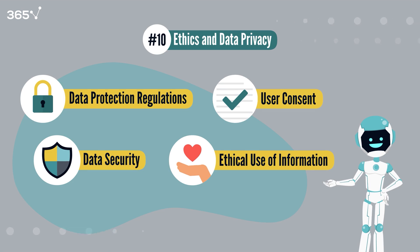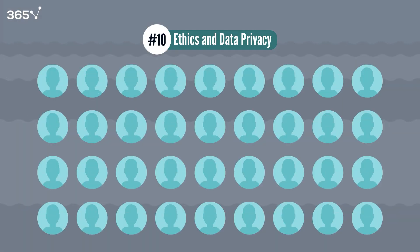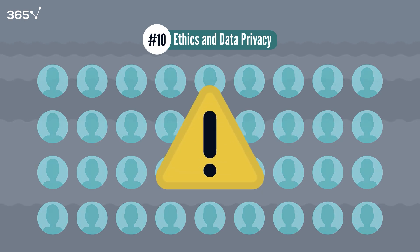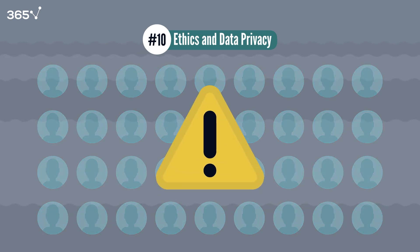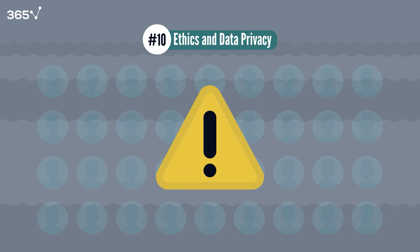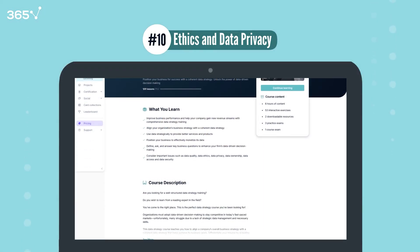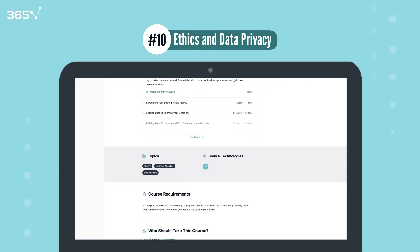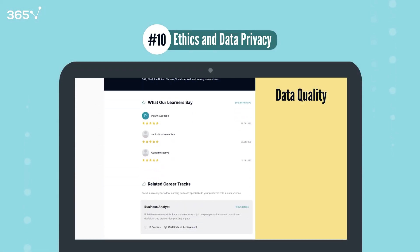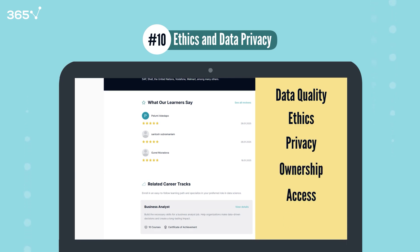This is particularly crucial in the age of artificial intelligence and machine learning. As AI systems process vast amounts of personal data, maintaining ethical standards and protecting privacy becomes even more important. To maintain the highest ethical standards in your work, explore our Data Strategy course — it covers crucial topics including data quality, ethics, privacy, ownership, access, and security.